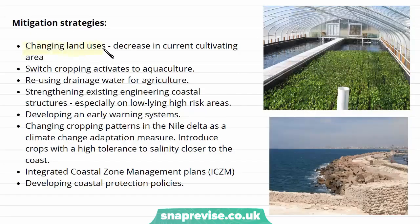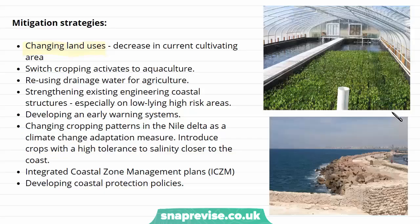The first mitigation strategy is changing land uses — decreasing current cultivation of the area and changing the land use so that agriculture is not at risk from rising sea levels. Another suggestion is switching cropping activities to aquaculture, which we can see in this photograph here. This is in a special greenhouse lab where plants are now being grown in water itself, and this is seen as a potential strategy. Also, reusing drainage water for agriculture so as to minimise the amount of water being wasted in the area.